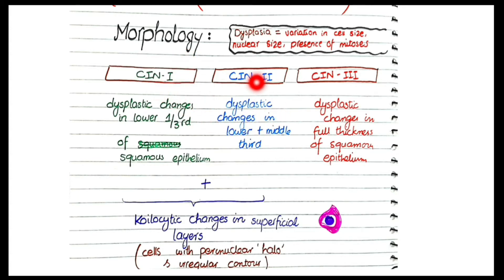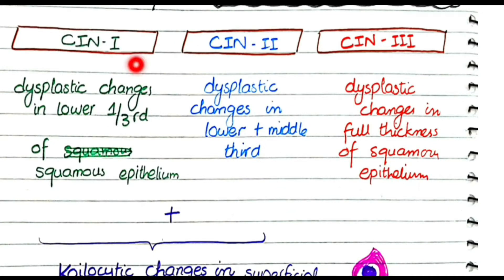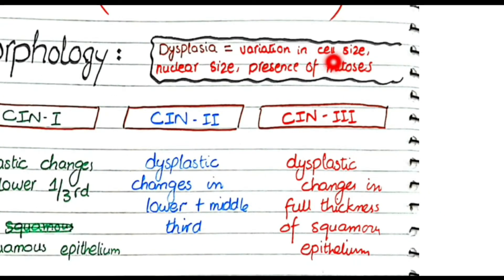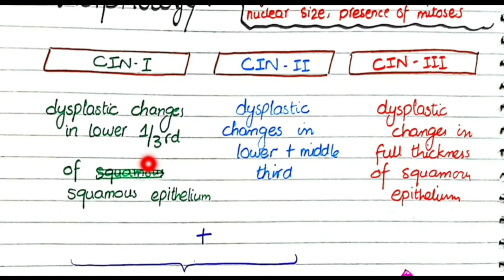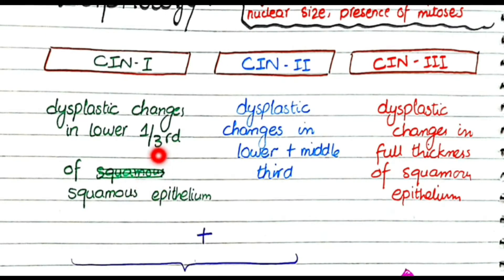How do we classify lesions into CIN 1, CIN 2, and CIN 3? In CIN 1, dysplastic changes are confined to the lower one-third of the squamous epithelium. If dysplastic changes — variation in cell size, nucleus size, or presence of mitosis — are present in the lower one-third and middle one-third, it is called CIN 2. If dysplastic changes are present throughout the full thickness of the squamous epithelium, it is categorized as CIN 3.